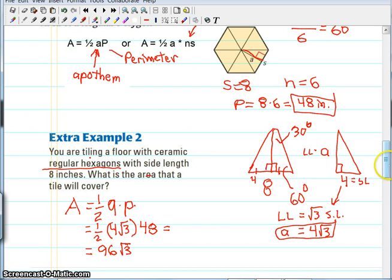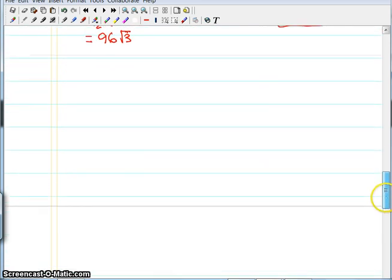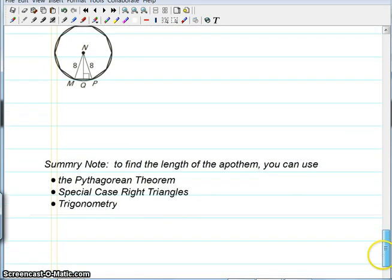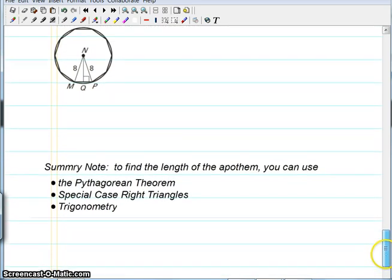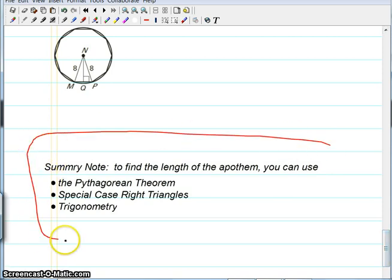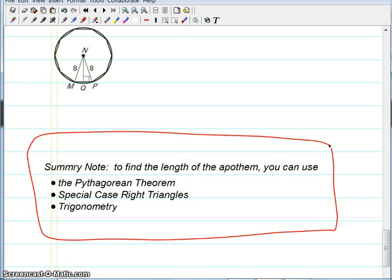A couple other things we want to point out, and then we're going to let you try this for yourself. It turns out that sometimes we're going to give you different pieces of this triangle. So, what you need to know is that there are multiple ways to find the apothem. Sometimes we'll give it to you. Other times, you're always going to be working with some right triangles, so you can use the Pythagorean theorem to find the missing side. You can use special case right triangles.